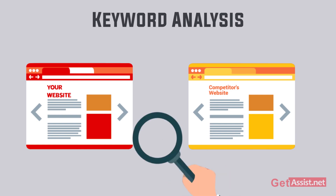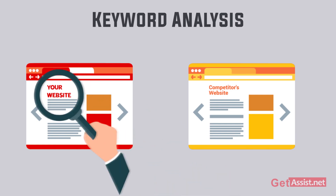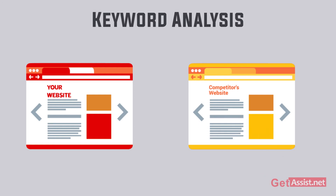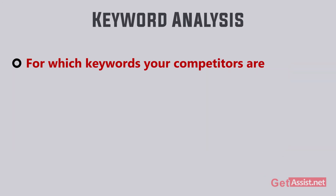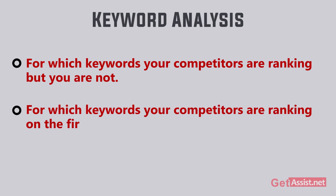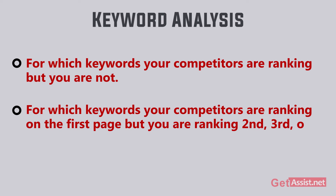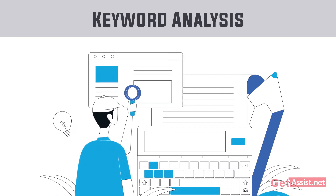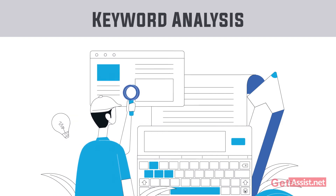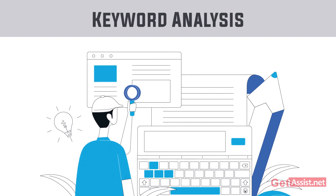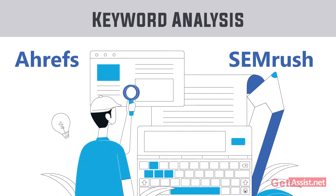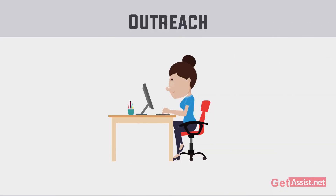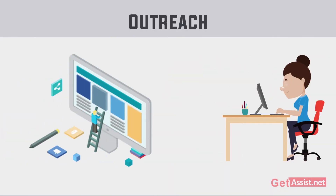For content gap analysis, analyze both your website and your competitors' websites to find out which keywords your competitors are ranking for but you are not, and which keywords your competitors rank on the first page for while you rank on the second, third, or fourth page. Based on this analysis you can target those keywords by modifying your content. Content gap analysis can be done easily using tools like Ahrefs and SEMrush.